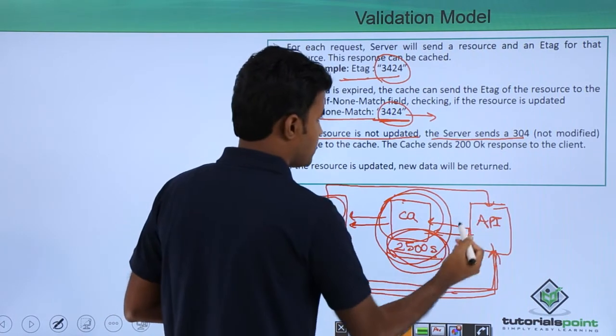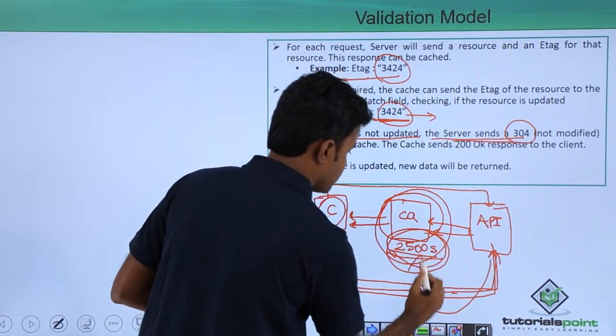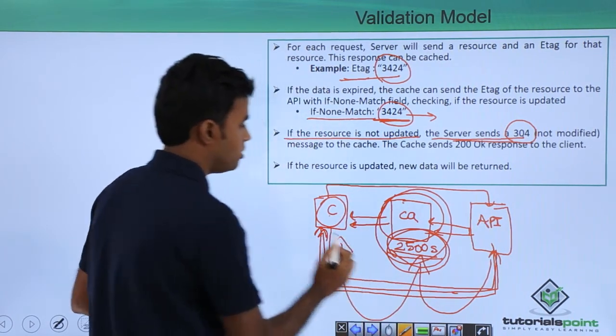If the resource is same, the server sends a 304 to the cache, and the cache sends 200 to the client.